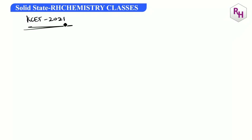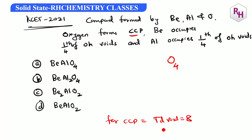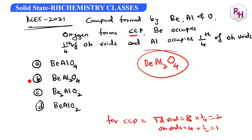This is a KCET 2021 question. Oxygen occupies CCP. For CCP, tetrahedral voids = 8, octahedral voids = 4. B occupies 1/4 of the octahedral voids: 4 × (1/4) = 1. Aluminum occupies tetrahedral voids: 8 × (1/4) = 2. The formula is BAl2O4.